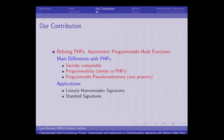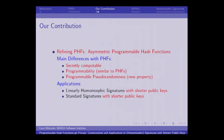So what is our contribution? We refine the programmable hash function definition, coming up with a new tool called asymmetric programmable hash functions, which has some similarities and some differences with the previous one. The main differences are that these asymmetric programmable hash functions are secretly computable, they have a programmability notion similar to the previous one, and additionally we have a completely new property called programmable pseudo-randomness. For applications, we get linearly homomorphic signatures and standard signatures with shorter public keys or matching the state of the art.